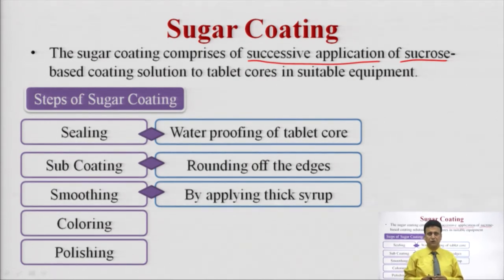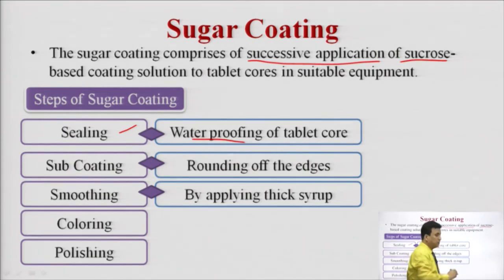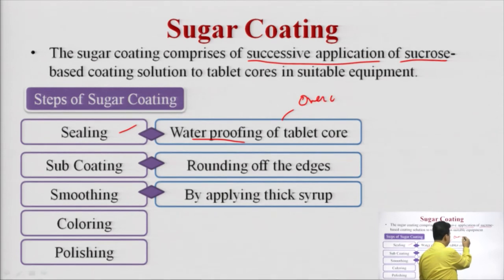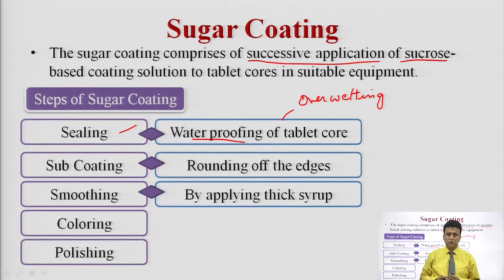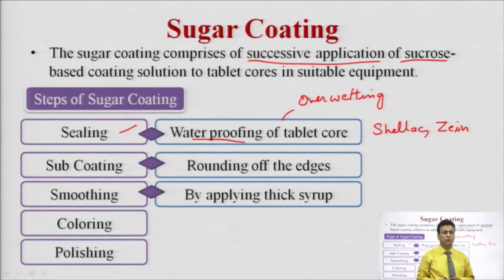There are various steps of sugar coating. The first step is sealing, which means waterproofing of the tablet core. Jo pehle tablet core banaya gaya, uski waterproofing karni hai — because if you do not apply waterproofing, a large amount of water penetrates the tablet core, over-wetting can occur, and the tablet may disintegrate or lose its chemical and physical stability. For waterproofing or sealing, we can use polymers like shellac and zein.